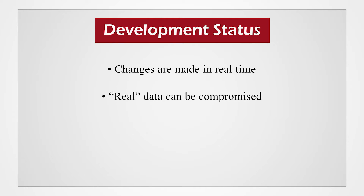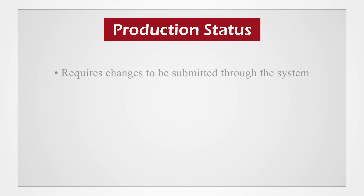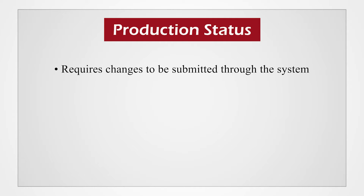For example, users can accidentally delete records and coding can be mismatched to data. While the freedom of development status is convenient for quick changes, it's important to note that changes made in development status cannot be reverted. In production status, REDCap requires changes to be submitted through the system, which is designed to keep track of all changes made. When changes are submitted, a summary of changes page will display a preview of the fields to be added, removed, and modified in the revision.